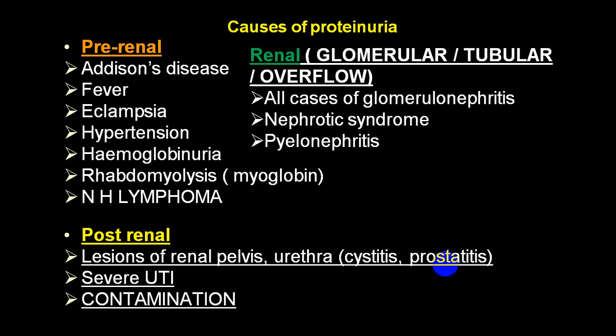Post-renal causes include damage in the pelvis — called pyelitis — or urethritis, cystitis, prostatitis, and severe urinary tract infection. A good number of times it can be because of contamination of the urine sample by urethral discharge or vaginal discharge.